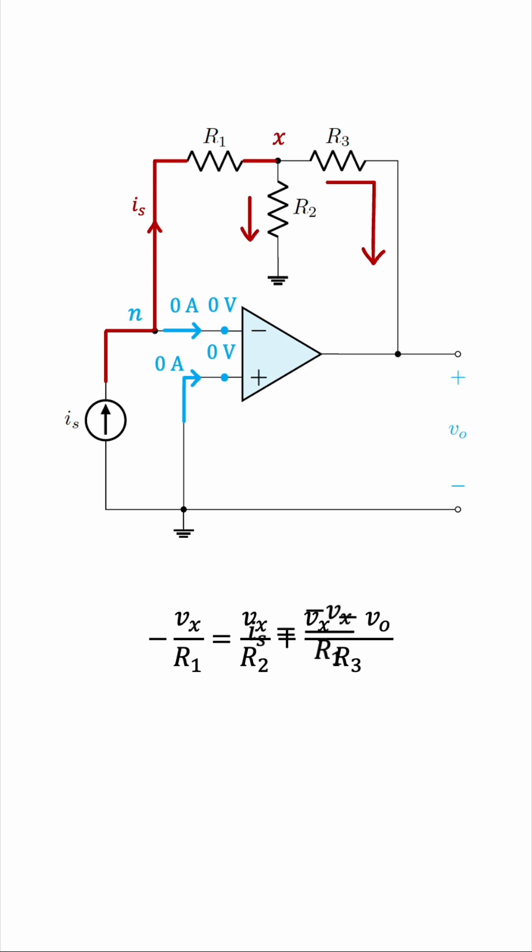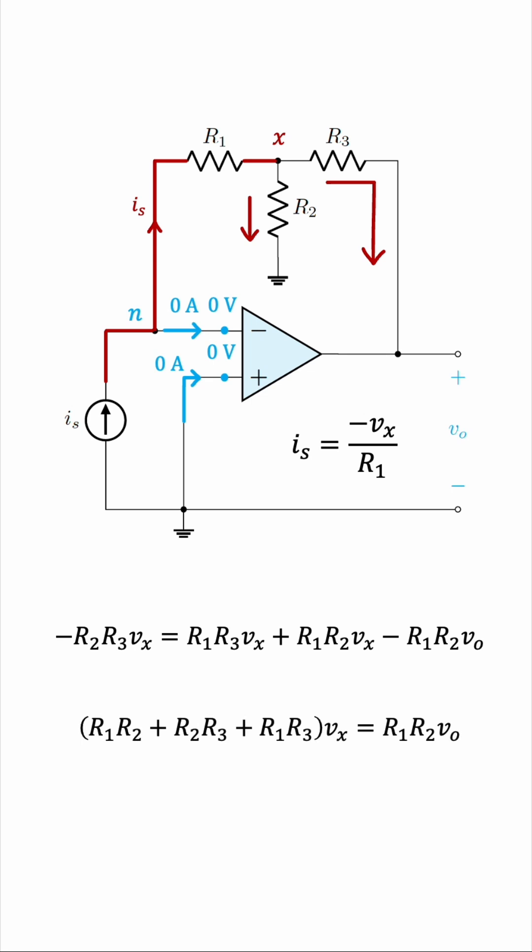Let's bring this equation over here, and now we can clear the denominators. Multiplying both sides by R1 times R2 times R3, we get this. So we don't have any denominators now. Let's expand the pair of brackets. And now we'll combine like terms. We'll bring everything involving Vx to one side, and everything with V0 to the other side.